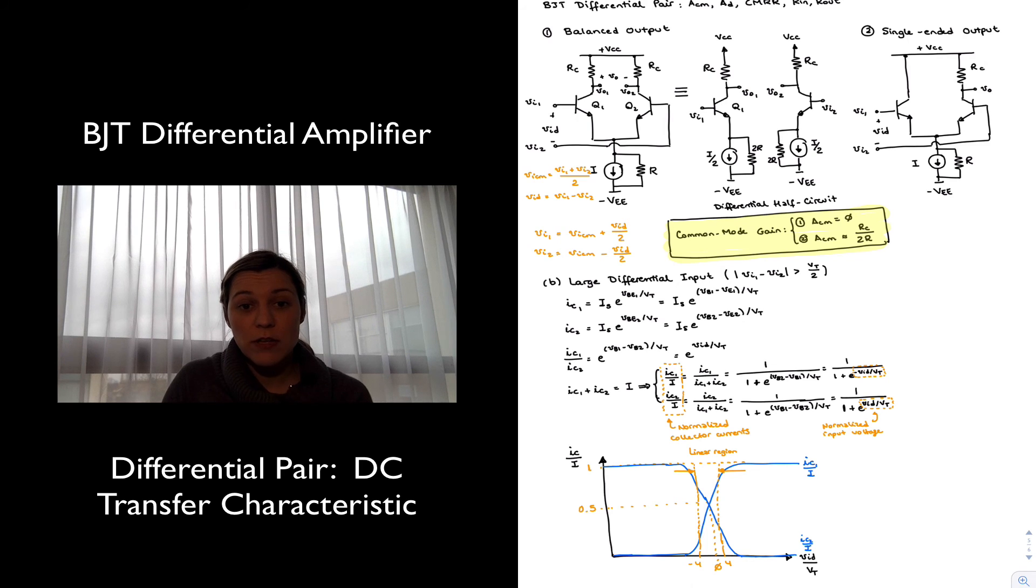Outside of that region, the behavior is not linear. All of the current is flowing through one branch, so it doesn't matter if you provide a small variation in input voltage, all of the current is going to be flowing through that branch. It is only within this region that you have amplification. A small variation in input voltage is going to produce a variation in output current. And again, we're going to consider, we don't want to be on the edges of those transitions, and so we want our input signal to be less than VT halves.